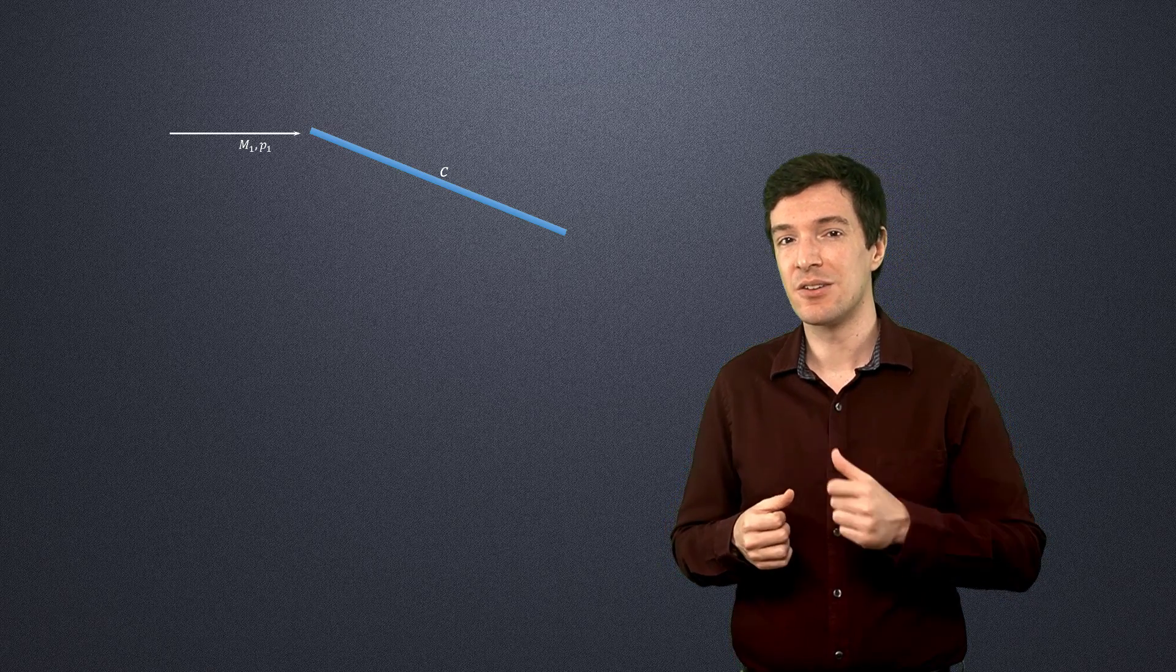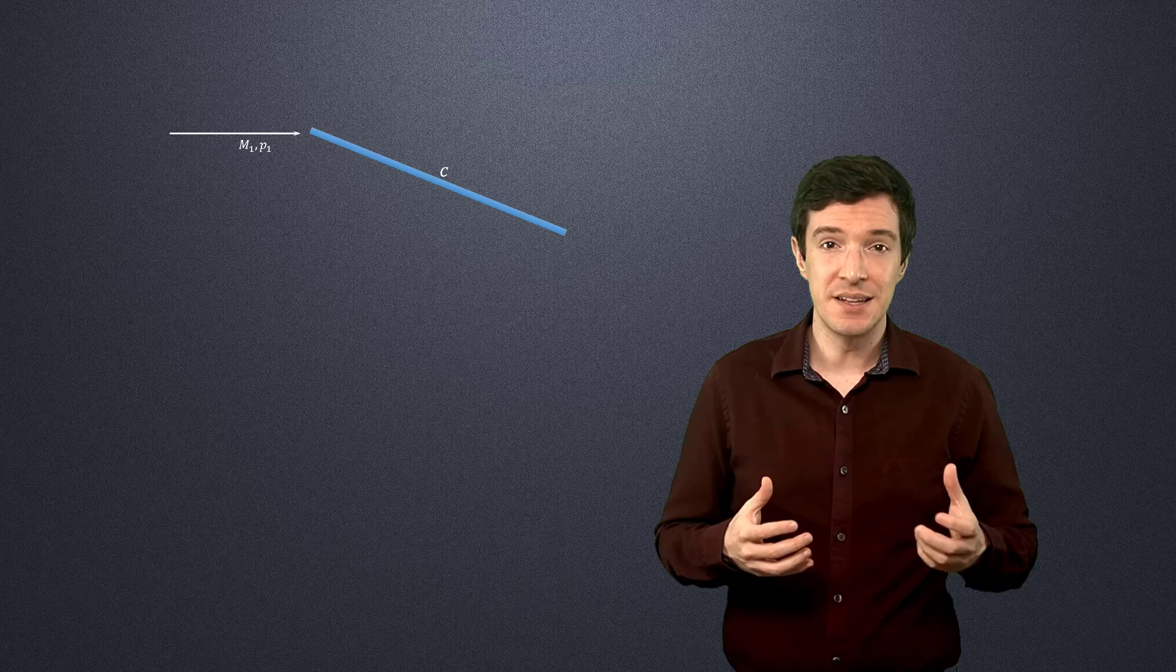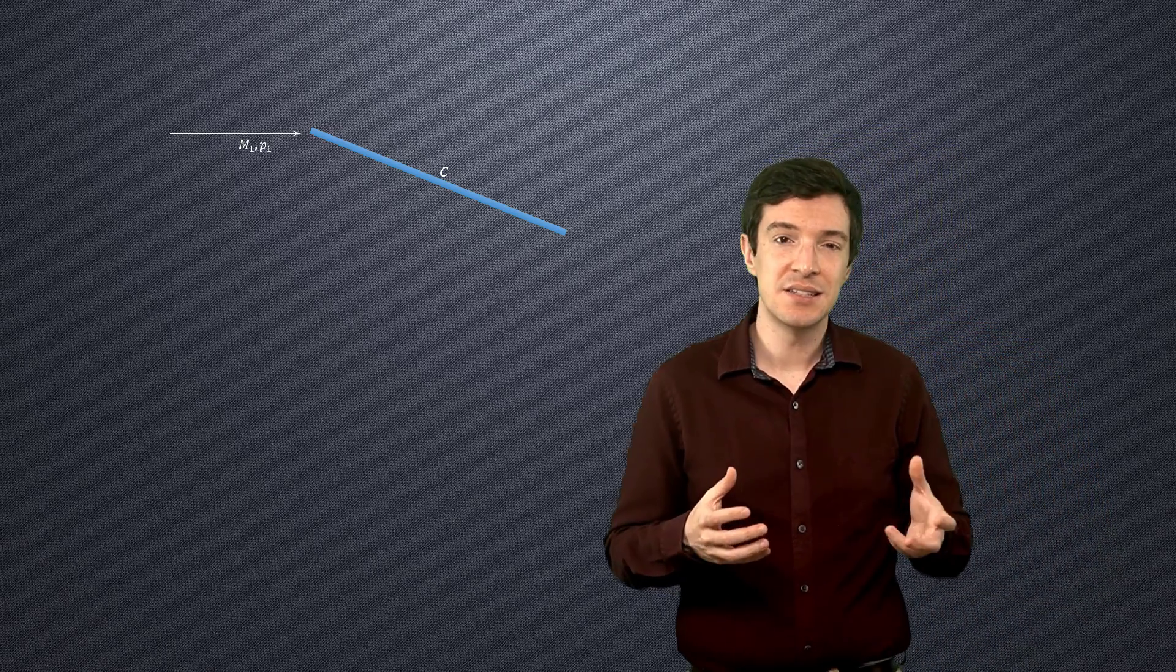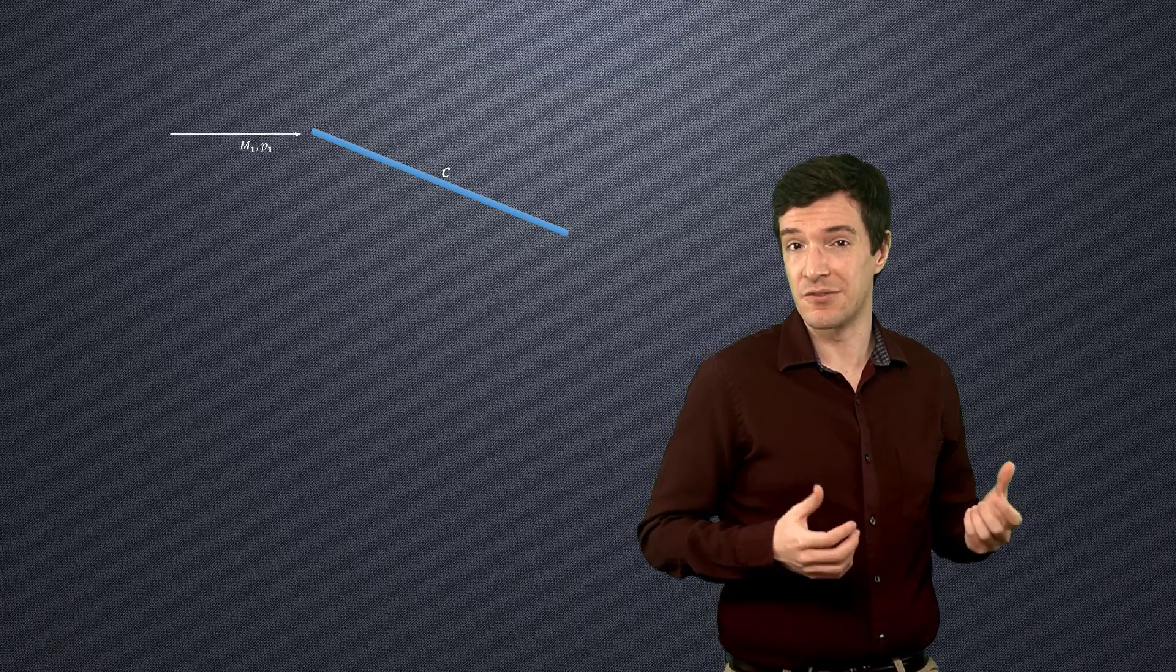Let's now look at another example, a supersonic flow over a flat plate airfoil, at the specified angle of attack. Like the diamond airfoil, the flow compresses and expands as it traverses around the flat plate airfoil.